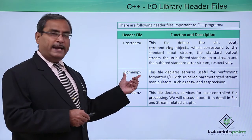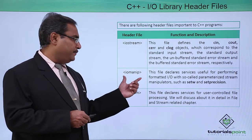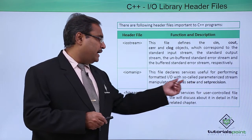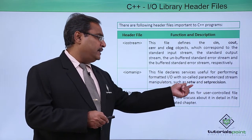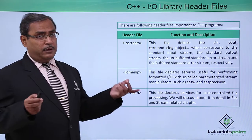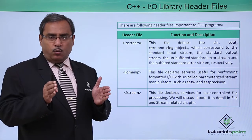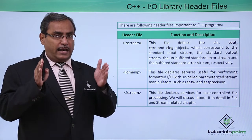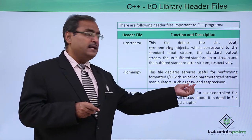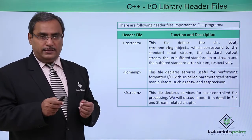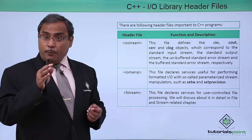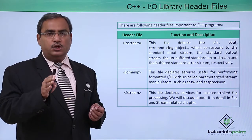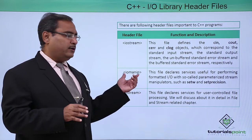The next header file is iomanip. This file declares services useful for performing formatted I/O with so-called parameterized stream manipulators, such as setw and setprecision. In our coding, if we require some formatting — for example, printing a person's age with a column width of 8 — we use setw, where W stands for width. For setprecision, we specify how many digits are required after the decimal point. To have formatted outputs, we include this header file.